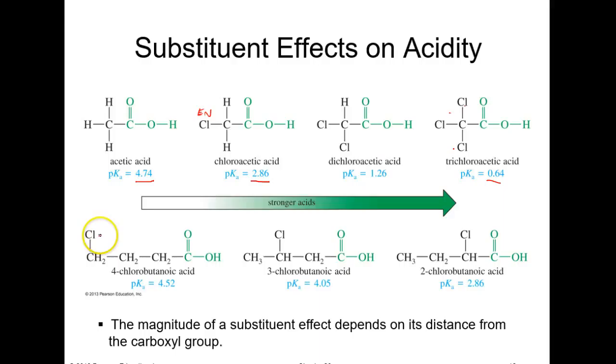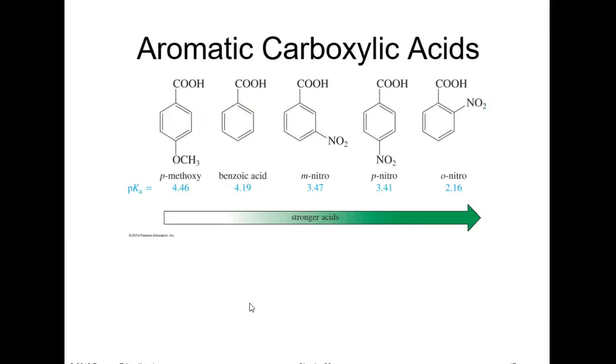Also, how close the chlorine is to the carboxylic acid matters. The closer it gets, the more acidic. If chlorine goes on the beta carbon or the third carbon, you get a drop in pKa. If the chlorine goes right next door, you get another drop in pKa. Same reason, inductive effect. The chlorine has a much larger inductive effect as it gets closer to the carboxylic acid. The magnitude of the substituent effect depends on its distance from the carboxyl group.